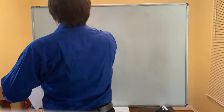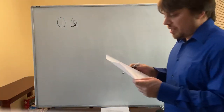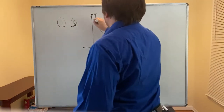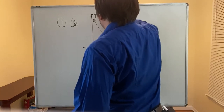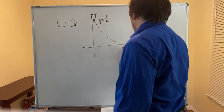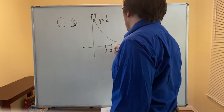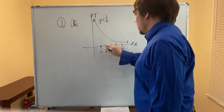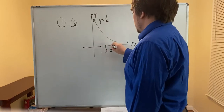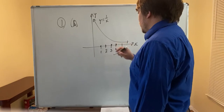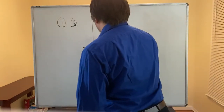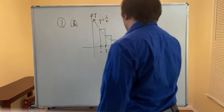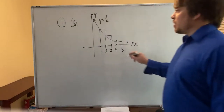Part B: repeat part A using left endpoints. Same graph, x = 1 to x = 5, four subintervals, endpoints at 1, 2, 3, 4, 5. Now we use left endpoints: the left endpoint of the first subinterval is 1, second is 2, third is 3, fourth is 4. We take the heights of the function at those points as the heights of the rectangles.